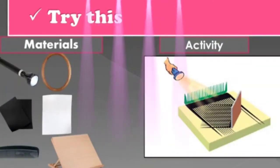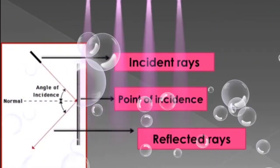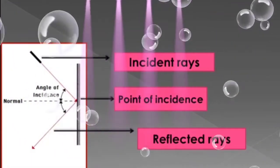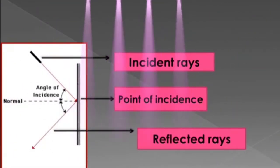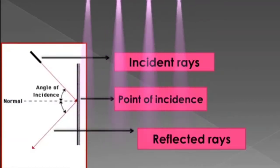Students, in this activity, light rays which fall on the mirror get reflected and travel in a different direction. The rays falling on any surface are called incident rays. The point at which an incident ray falls is called the point of incidence. The rays going away from the surface after reflection are called reflected rays. The direction of the reflected rays is decided by some rules which are called laws of reflection.